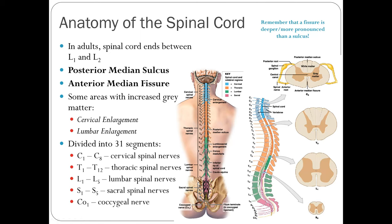The spinal cord is divided into five regions. The cervical region has eight cervical spinal nerves, C1 to C8. The thoracic region has 12 thoracic spinal nerves, T1 to T12. The lumbar region has nerves L1 to L5. The sacral region has five sacral spinal nerves, S1 to S5. And there is one coccygeal nerve at the very bottom.